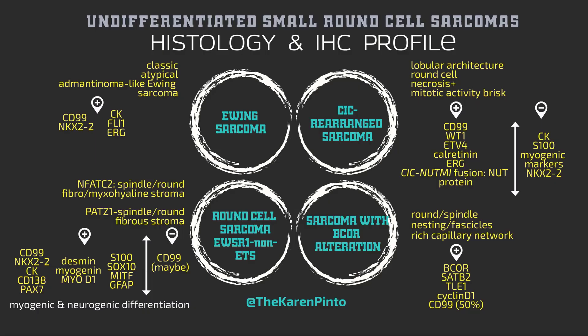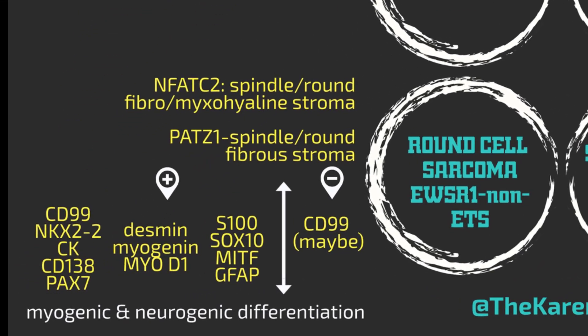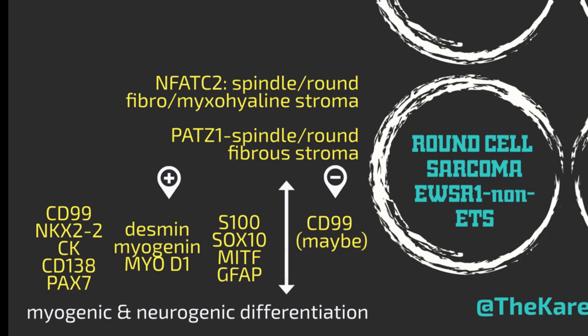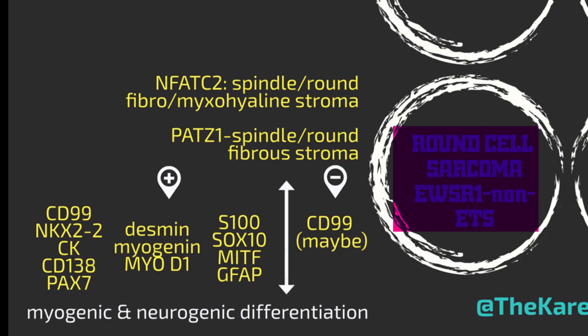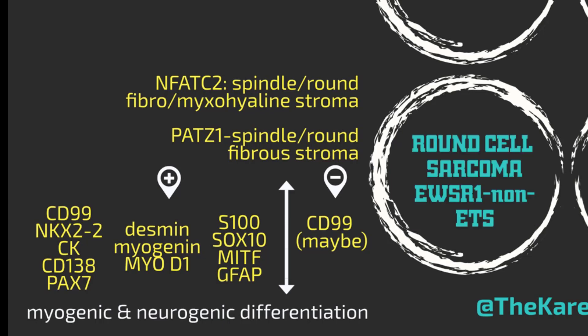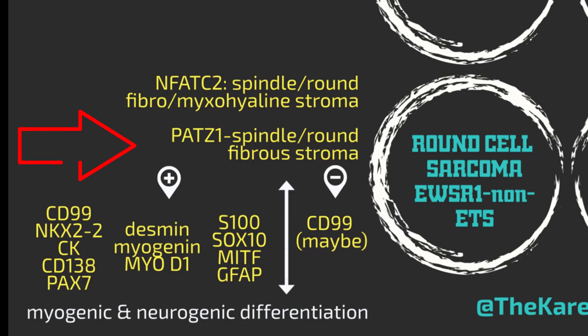This is where things get really complicated. The fourth group is the so-called round cell sarcomas with EWSR1 non-ETS fusions. There are two classes of tumors in this group — potentially others to be added — the first being an EWSR1-NFATC2 fusion and the second an EWSR1-PADS1 fusion.